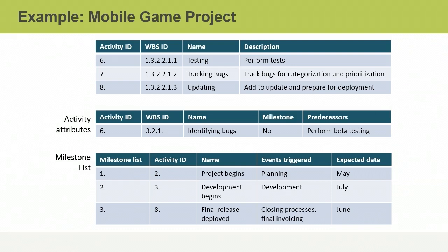The milestone list for the project shows the critical events that the project manager has identified: the start of the project in May, which triggers the planning phase; the start of development in July, which triggers the start of development work; and the deployment of the final release in June the following year. This last event is critical because it triggers the closing activities and final invoicing. So now you know the role the milestone list plays in managing a project — it identifies all project milestones that trigger events you need to carefully manage.